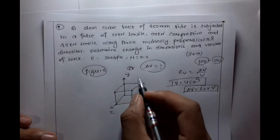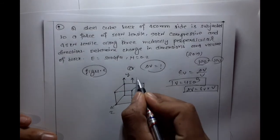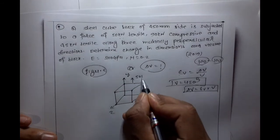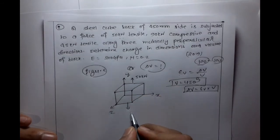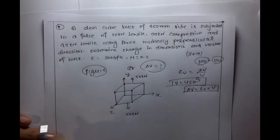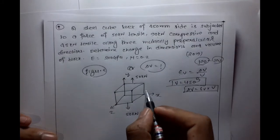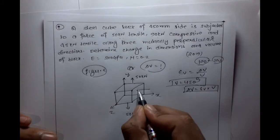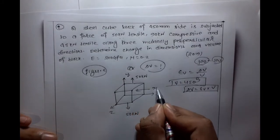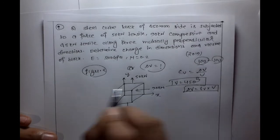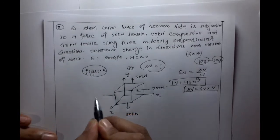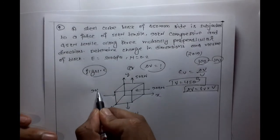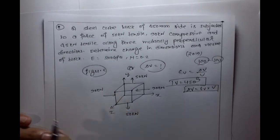Let us suppose sigma max. If we take tensile, the force along X is 50 kilonewton tensile. Along Y the force is 90 kilonewton compressive, and along Z it is also 90 kilonewton compressive.